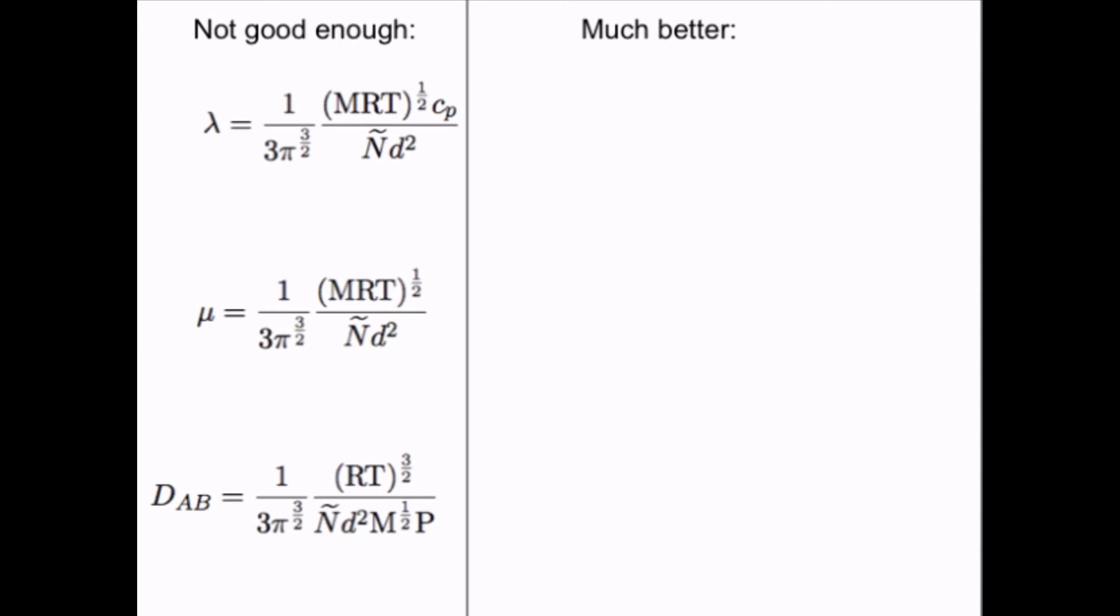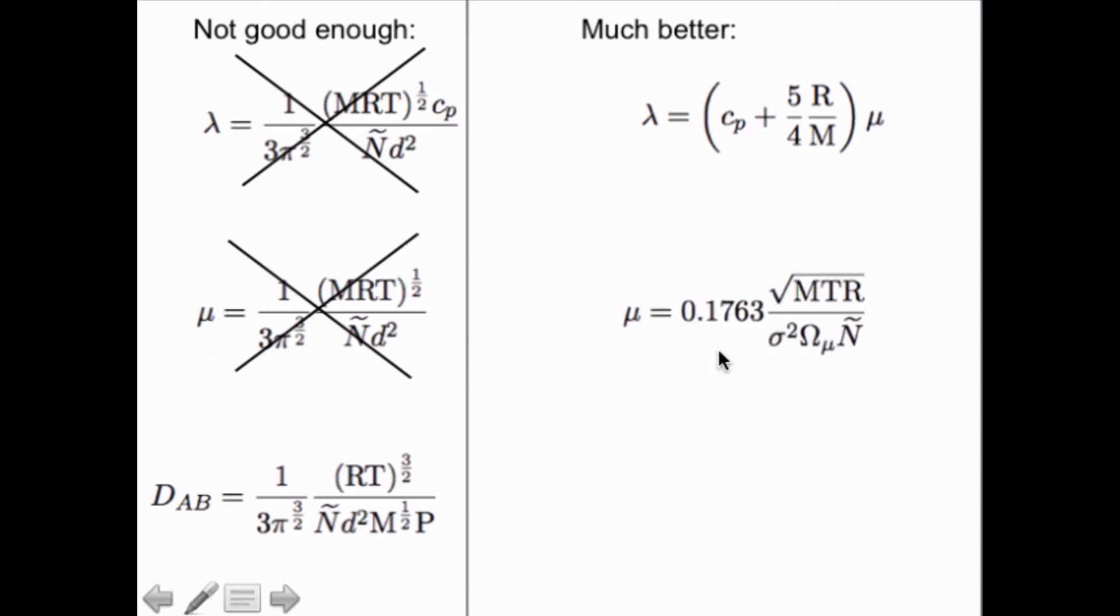But these equations are not good enough. So instead of the equation for the thermal conductivity to the left here, we should use something like this. Instead of the dynamic viscosity here, we should use this equation here. And instead of this one for mass diffusivity, we should use this one here, where we have introduced another constant here, 0.2088. We still have the molar mass, an average molar mass. We have the characteristic collision diameter. We have a correction factor. It has to do with the forces between the molecules, that the temperature in Kelvin still, and the gas constant, Avogadro's number, and the total pressure.